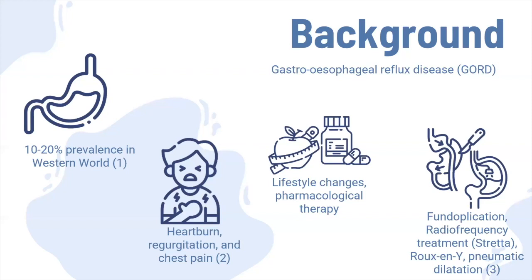Gastroesophageal reflux disease is one of the common conditions that affects approximately 10 to 20 percent of the world. It typically presents with symptoms such as heartburn, regurgitation, and chest pain. Most patients' symptoms will be well controlled with lifestyle changes like optimizing the diet and pharmacological therapy such as proton pump inhibitors and histamine receptor inhibitors.